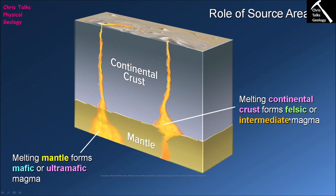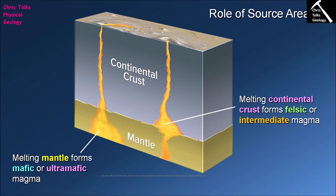Intermediate magmas are a bit more complicated — they result from mixing between magma produced by melting continental crust and some magma produced by melting mantle rocks. So intermediate magmas contain silicon, aluminium, sodium, and potassium from the continental crust melt, but also a reasonable amount of calcium and lesser iron and magnesium from the mantle-derived magma. The source area is therefore all-important in controlling the chemical composition of the magma being formed.